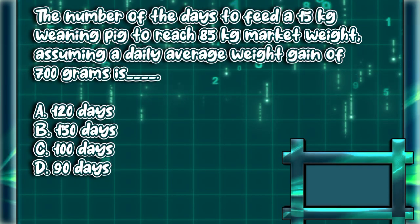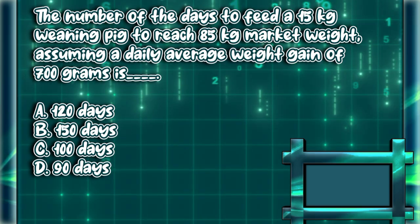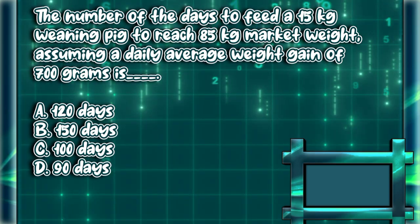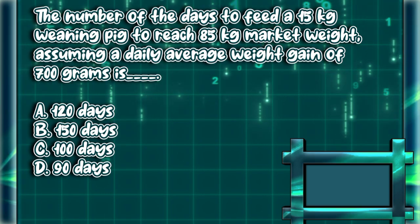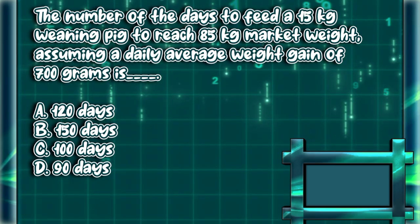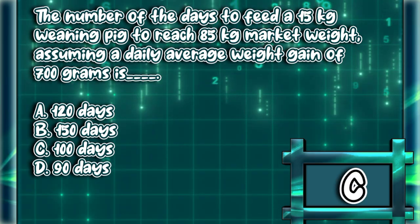The number of days to feed a 15 kg weaning pig to reach 85 kg market weight, assuming a daily average weight gain of 700 g is: A. 120 days. B. 150 days. C. 100 days. D. 90 days. The answer is letter C.